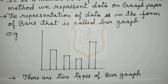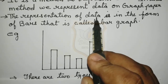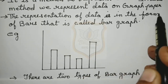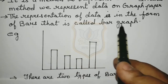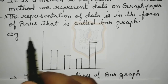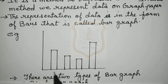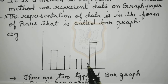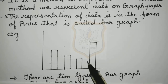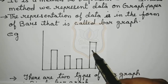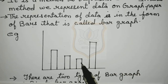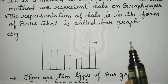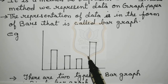So students, the representation of data in the form of bars is called a bar graph. Here is an example — see, representation of data in the form of bars. These are bars, and I have represented data in the form of bars. So this is called a bar graph.